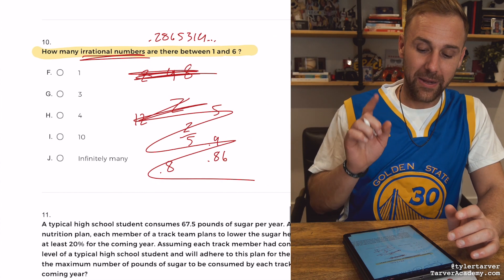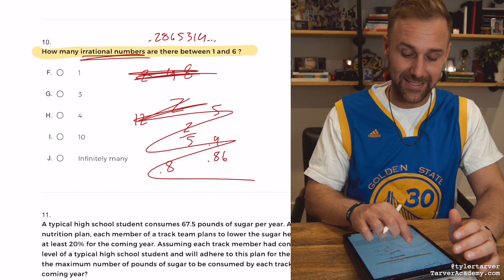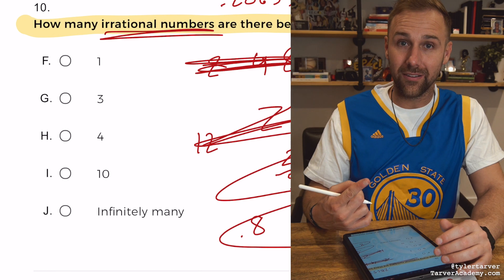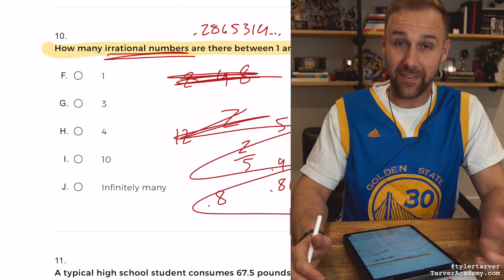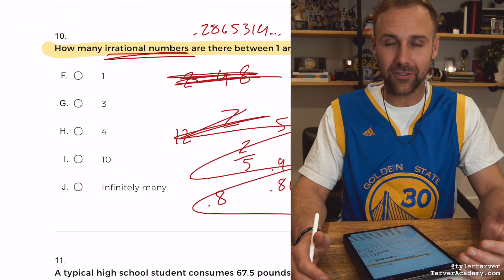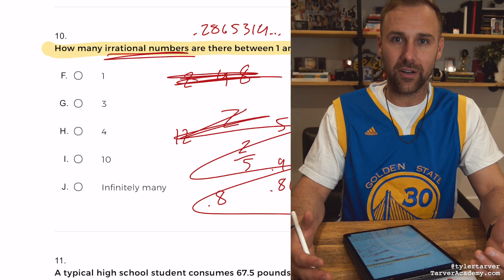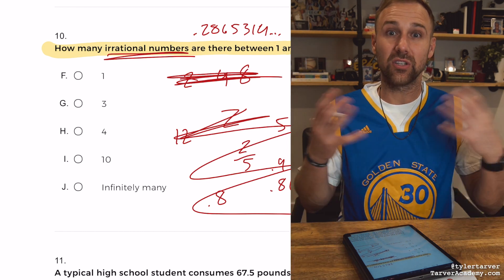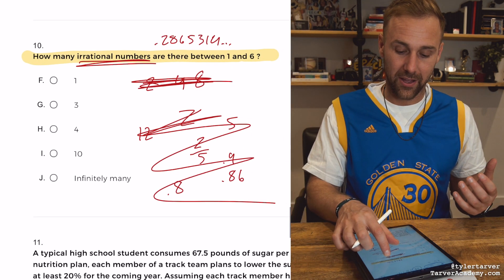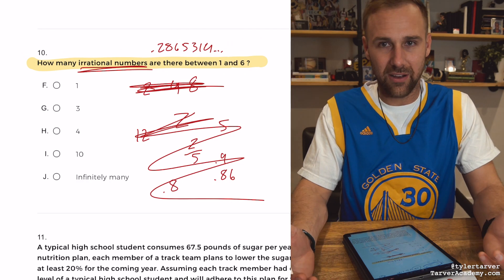So when they ask how many irrational numbers are between one and six, there's not one because Pi's in there and that's one. You're like, oh, is pi the only irrational number? No. An irrational number is anything that just keeps going. It doesn't stop.